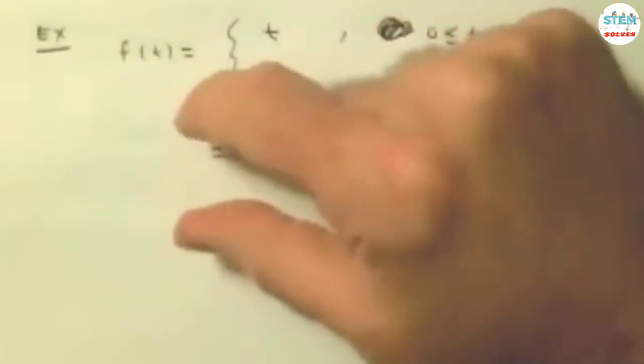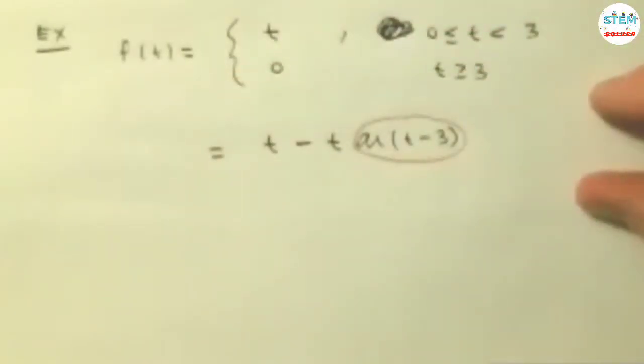So right now, it's a way of writing a piecewise function in one line. And what we're heading towards will allow us to take a Laplace transform without having to resort to the definition if we don't need to.